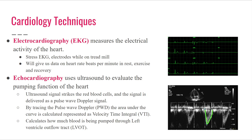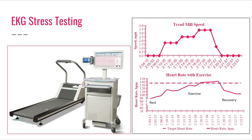Echocardiography is basically an ultrasound of the heart. An ultrasound probe sends sound waves throughout the body and receives echoing signals back, which generate an image. For example, the ultrasound signal can strike a red blood cell and be delivered as a pulse wave Doppler signal. Pulse wave Doppler shows the movement of blood throughout the heart. By tracing it, we can get the area under the curve — representing the velocity time integral (VTI) — which is used to calculate cardiac output and stroke volume, showing how much blood is pumped through the left ventricular outflow tract (LVOT).